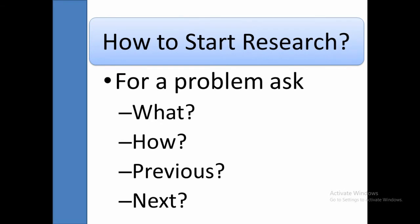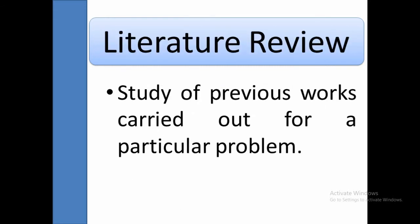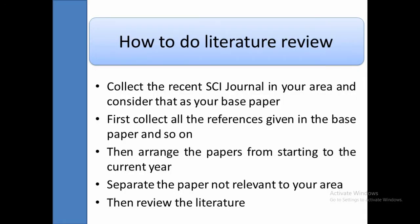The 'what' and 'how' questions can be answered by reading the paper itself. For 'previous,' you have to do a literature review. What is a literature review? It is the study of previous work carried out for a particular problem. In your selected paper — that is your base paper — you need to study what works were previously carried out. Most researchers skip the literature review and directly implement something, which is why they are unable to complete research within the stipulated period. Collect recent SCI journal papers from publishers like Elsevier, Taylor and Francis, IET, or IEEE in your area and consider one as your base paper.